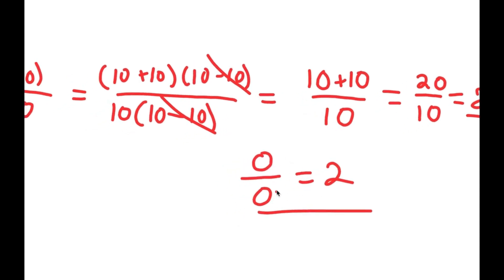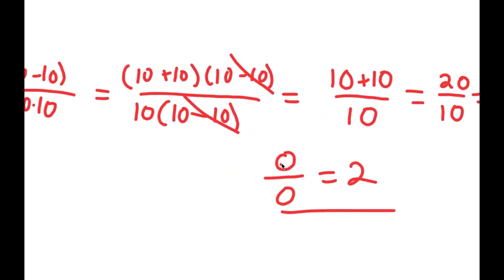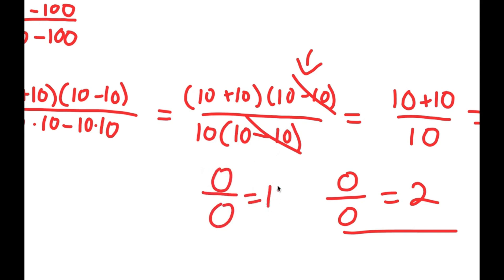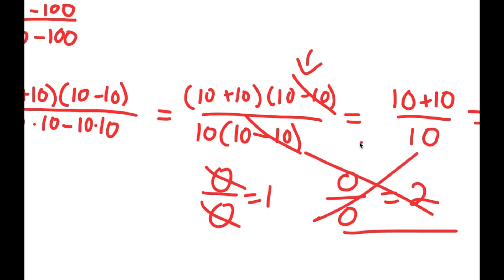So obviously 0 over 0 is not 2. Where did I go wrong? Well, I went wrong right here. Remember how I canceled out the 10 minus 10 over 10 minus 10? What is 10 minus 10? 10 minus 10 is 0. So that's saying that 0 divided by 0 is 1, and I can't cancel these two out because 0 divided by 0 is not 1. That is wrong, and 0 divided by 0 is not equal to 2.